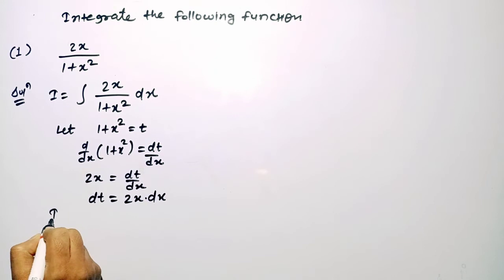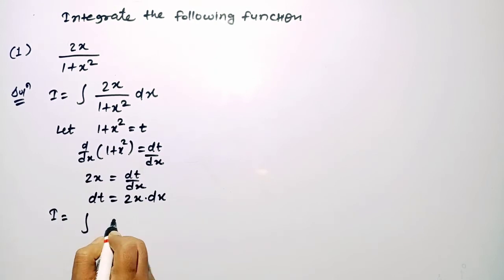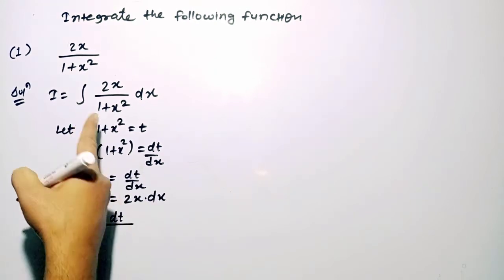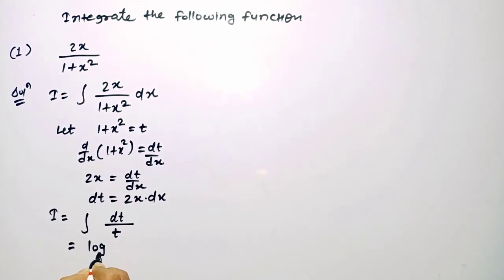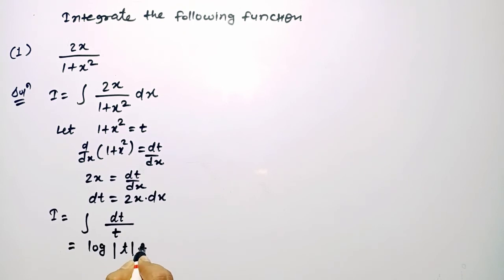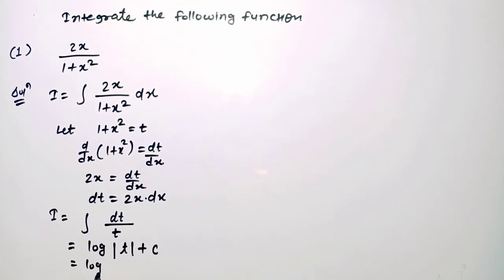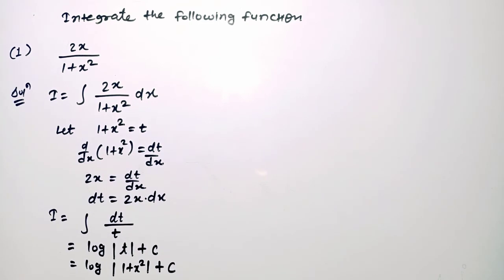We can see in the numerator and denominator that the integrating part becomes dt upon t. We know that the integration of 1 upon t is log t. So the answer is log(1 plus x square) plus c.